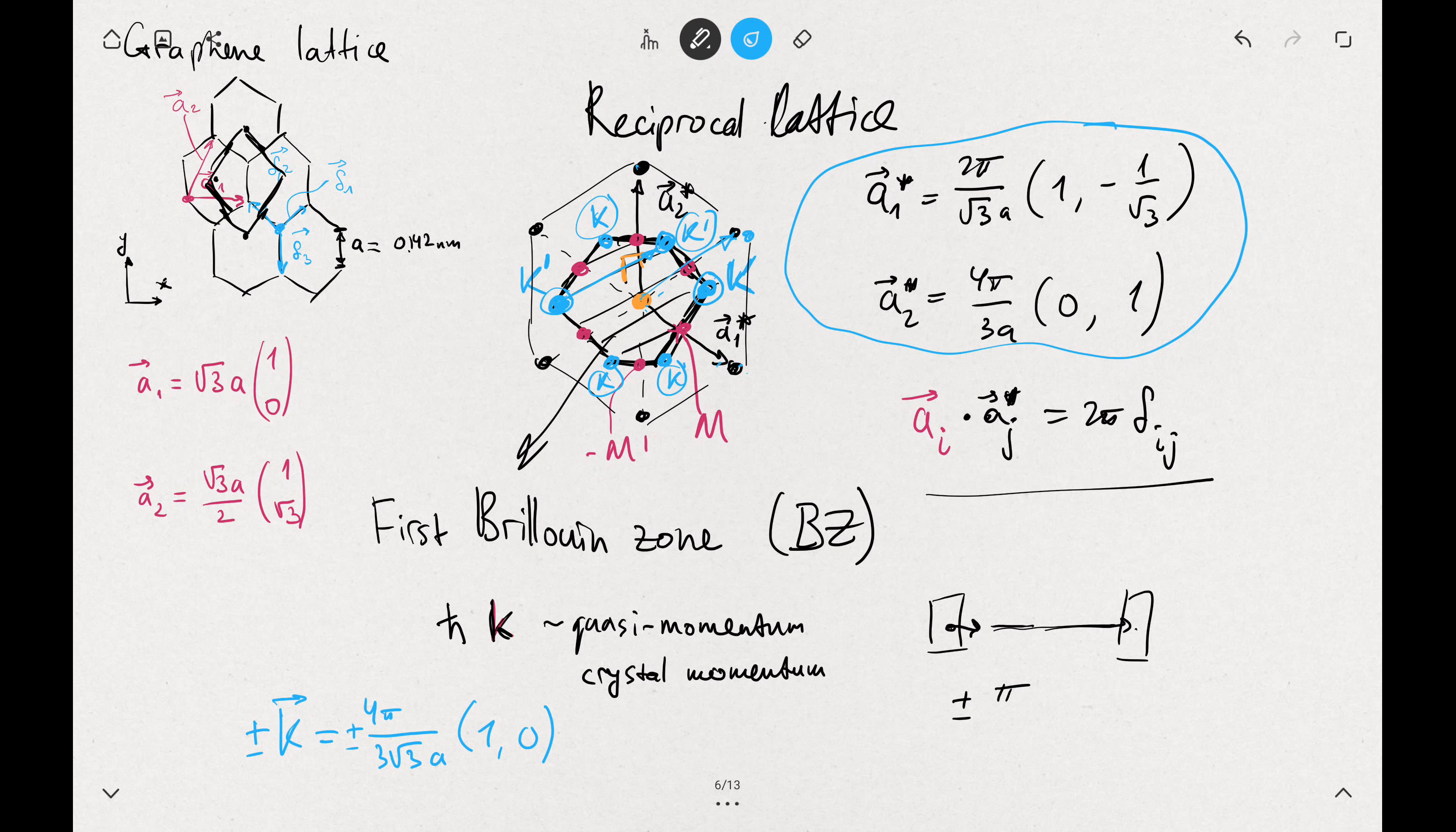So now we can go to the bands, to the electronic bands. And we will be only considering the π bands. And for that, we will use the tight binding model.